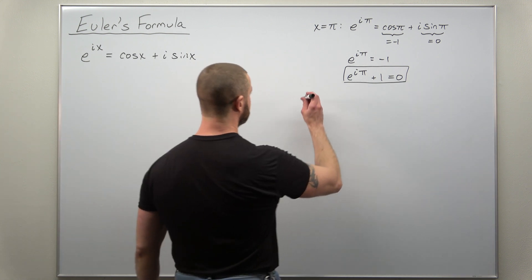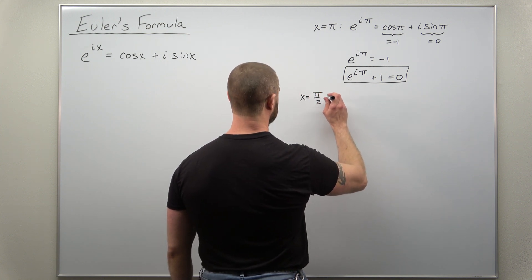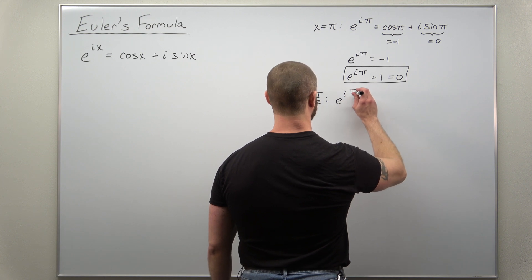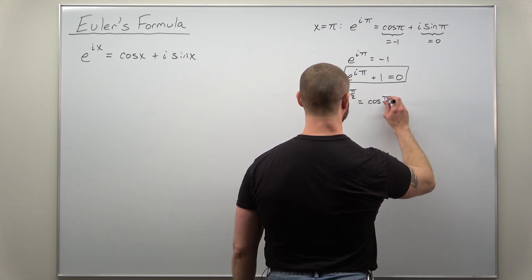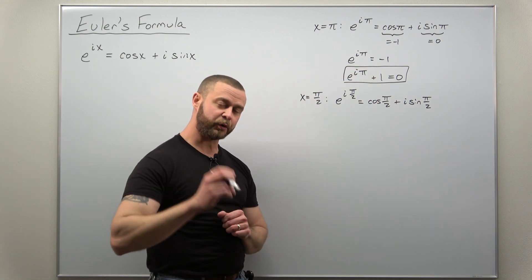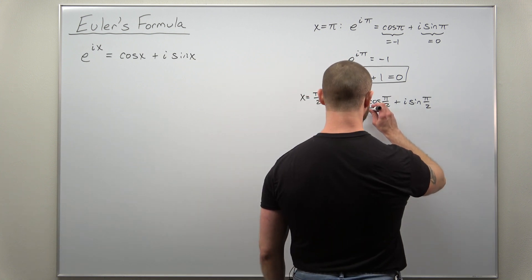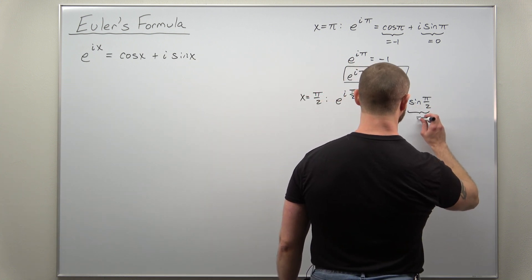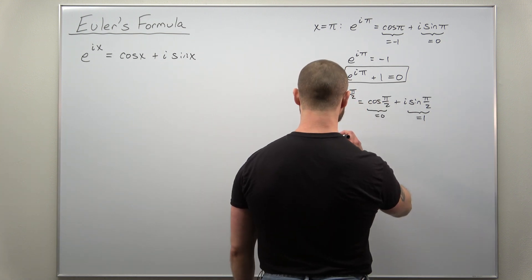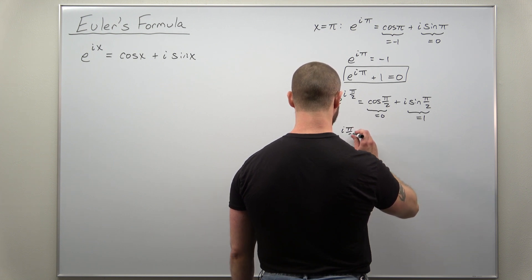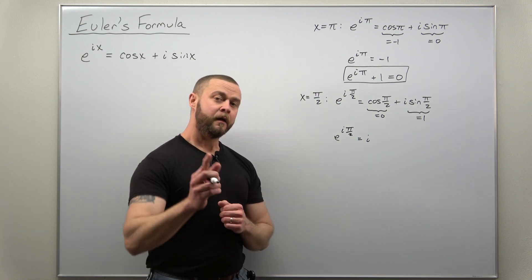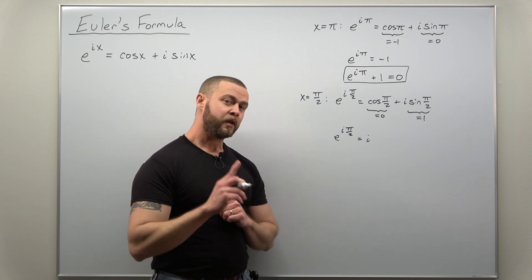Let's go ahead and plug in another value for x — let's go with π/2. On the left we get e^(iπ/2) and on the right cosine(π/2) + i·sin(π/2). Cosine of π/2 is 0 and sine of π/2 is 1, so the right-hand side is just i·1, or i. We get the interesting result: e^(iπ/2) = i.